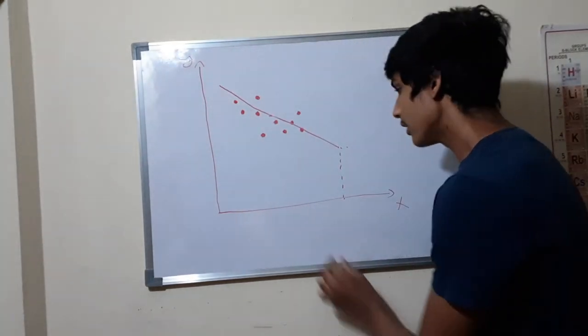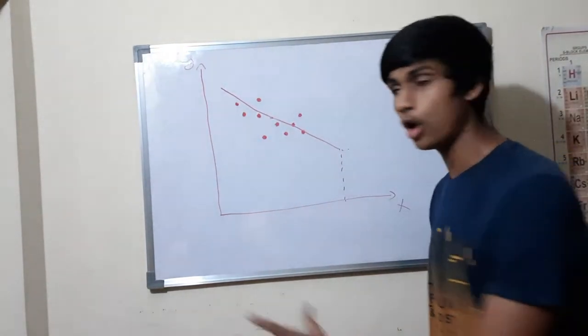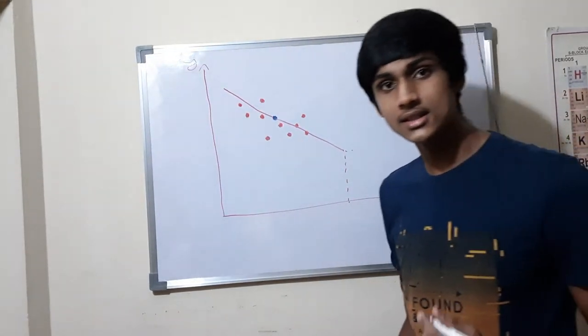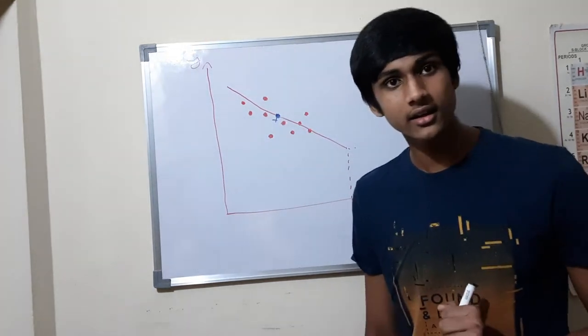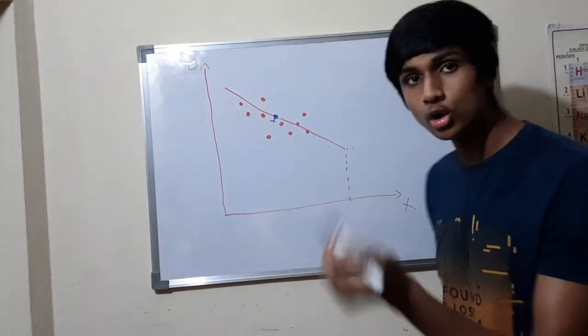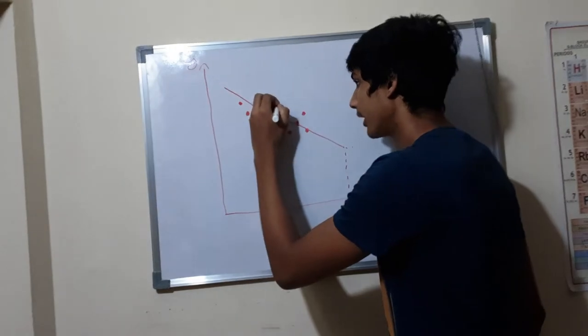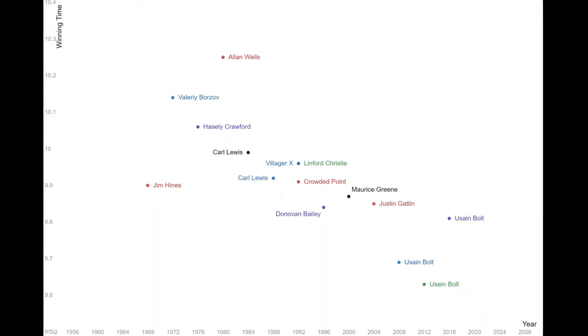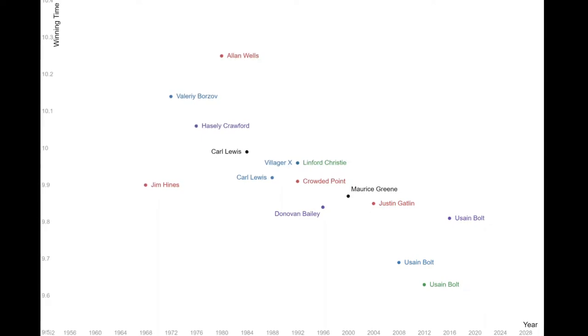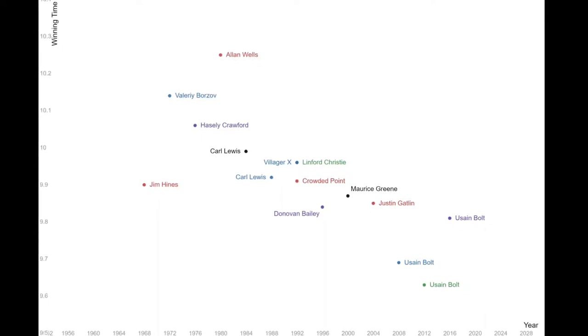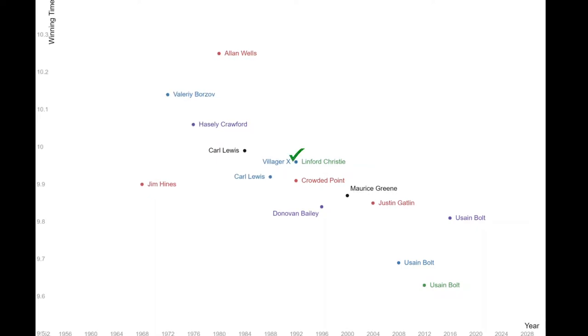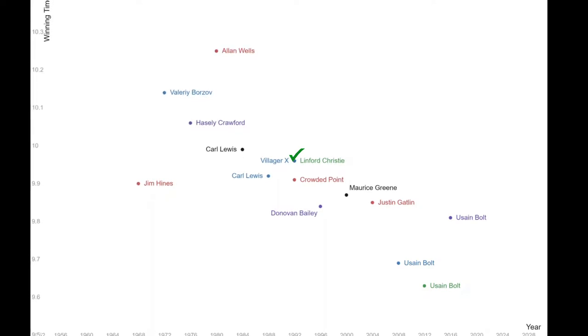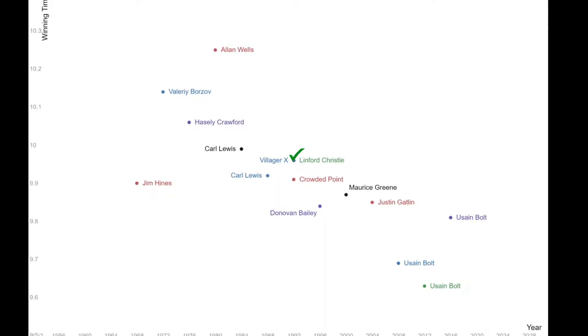So what we would do is average out all the x coordinates and all the y coordinates to get this most crowded point. Then since this villager x does not actually exist in our data set, we will find the point closest to our villager x and name that point our reference point. We get the most crowded point to be 1992 comma 9.91, and clearly we can see that the point closest to this crowded point is 1992 comma 9.96, or with regards to our analogy we will call this point villager x.